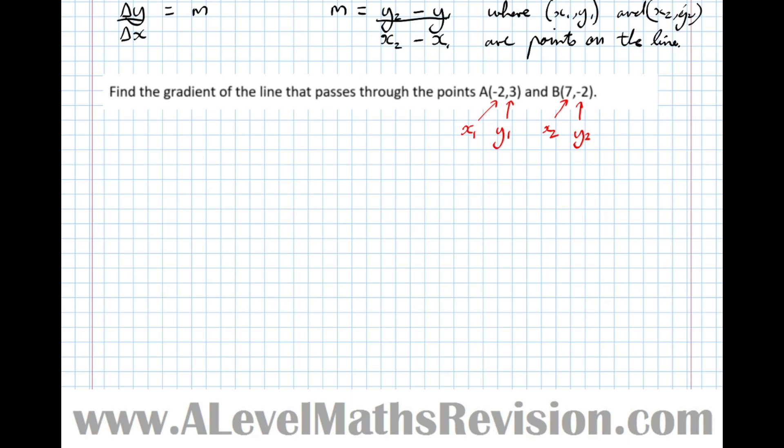So the gradient m is y2 minus y1, so minus 2 minus 3, over x2 minus x1, 7 minus minus 2. Don't forget that double minus. So minus 2 minus 3 is minus 5, and 7 double minus 2 is 9, so minus 5 ninths is the gradient.